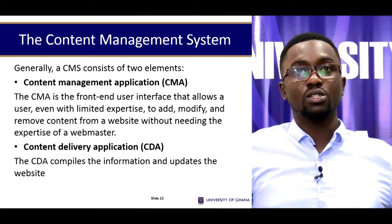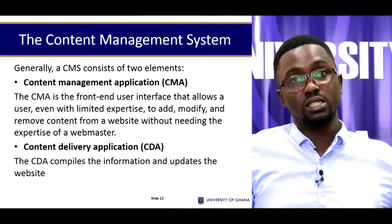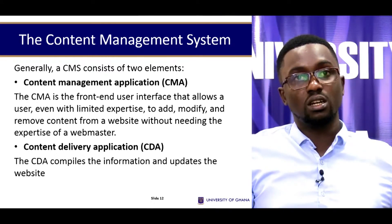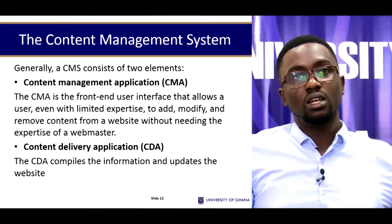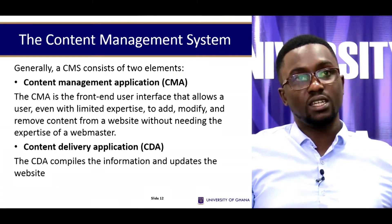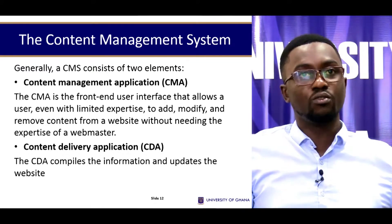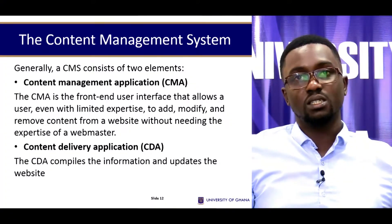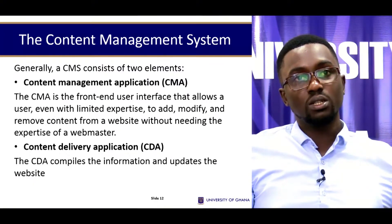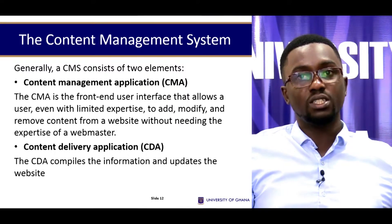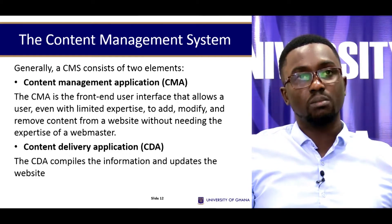Generally, a CMS consists of two main elements. We have the content management application, which is the CMA, and then the content delivery application. The CMA is the front-end user interface and allows the user, even with limited experience, to add, modify, and remove content from a website without needing the expertise of a webmaster — making the work very simple. A content delivery application compiles the information and updates the website. These are the two main elements of a content management system.